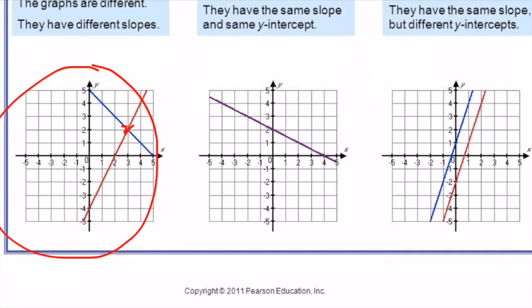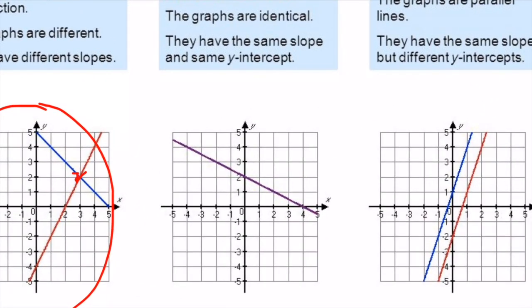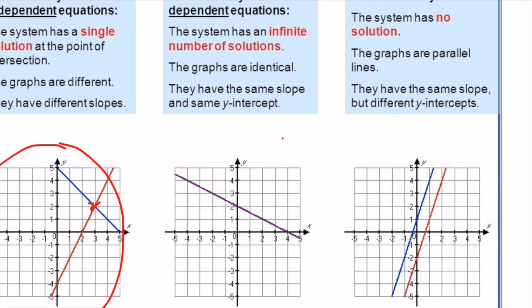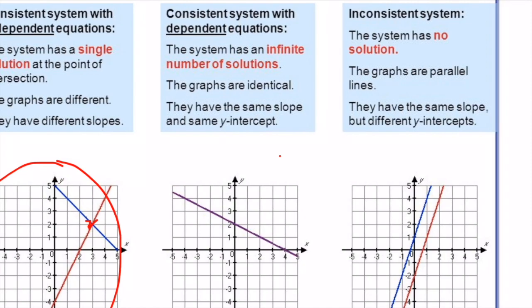In the second example, the red and blue lines are right on top of each other — they're actually the same line. Any point along here satisfies both equations, so they have infinitely many solutions. They have the exact same slope and the exact same y-intercept.